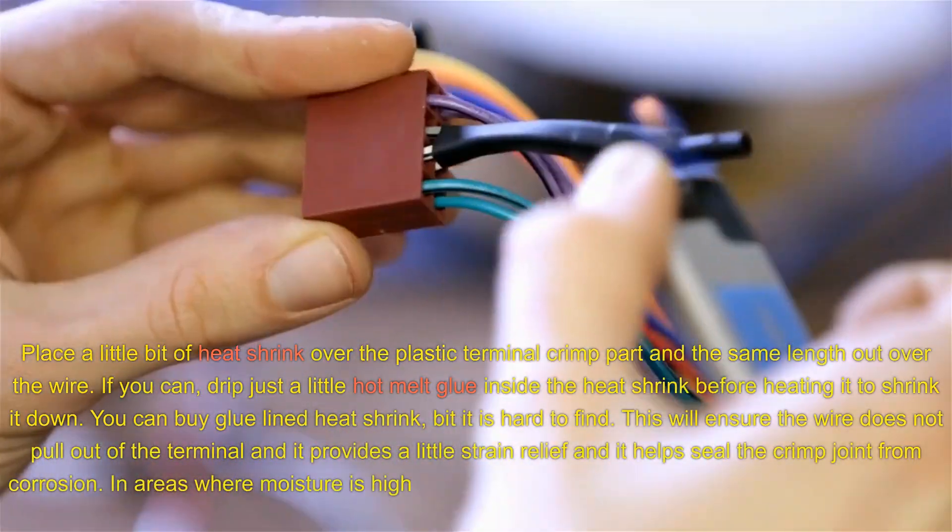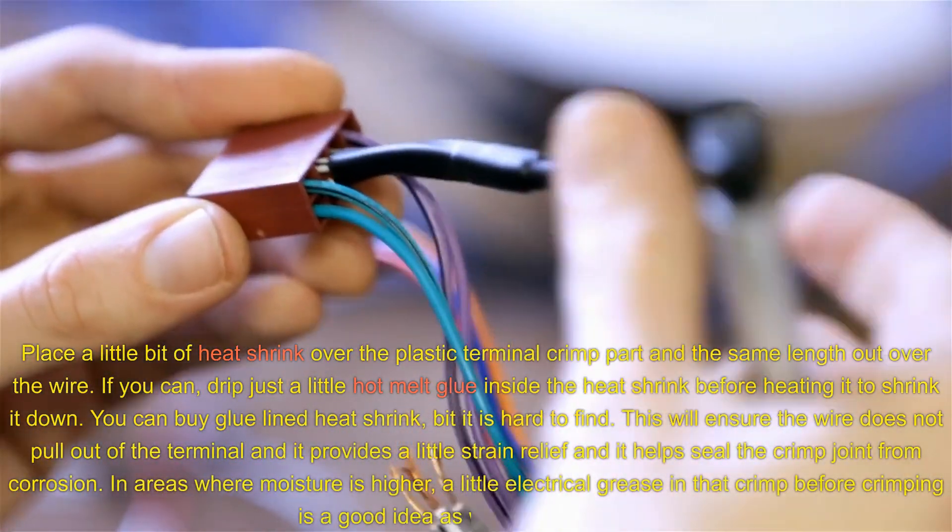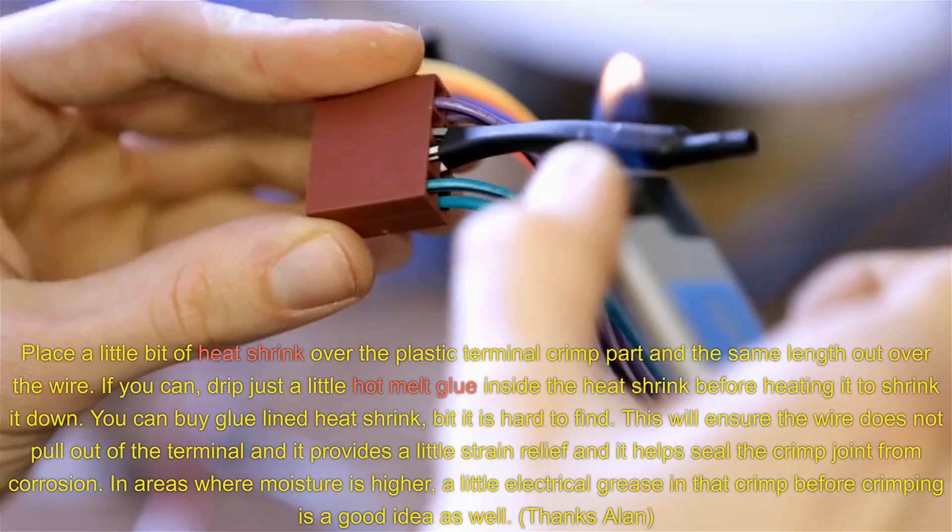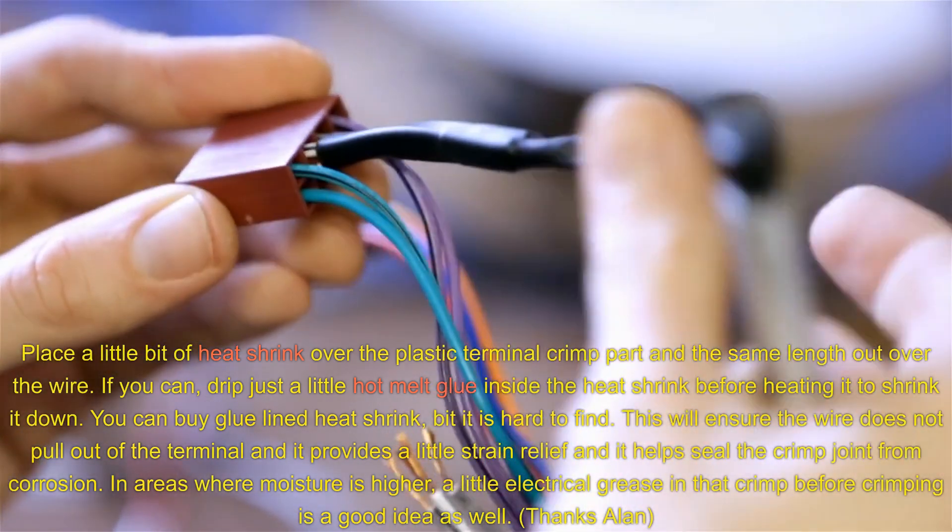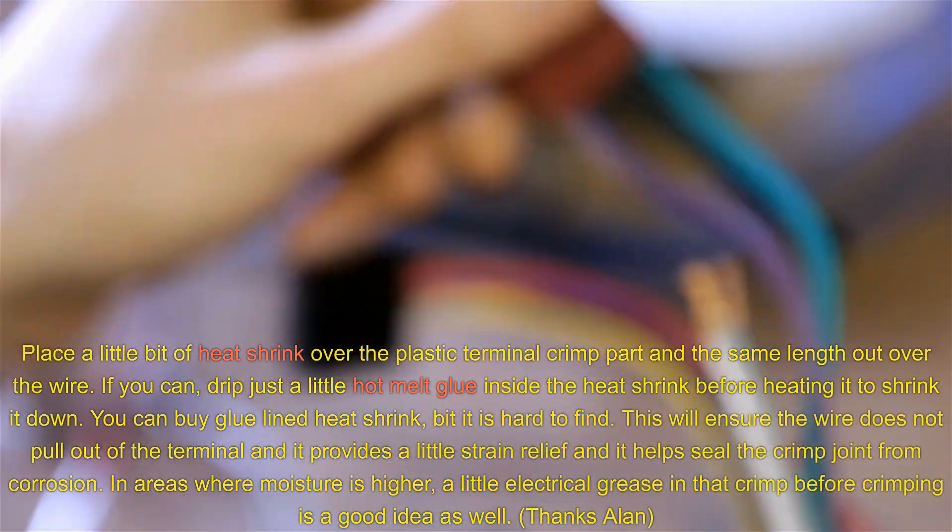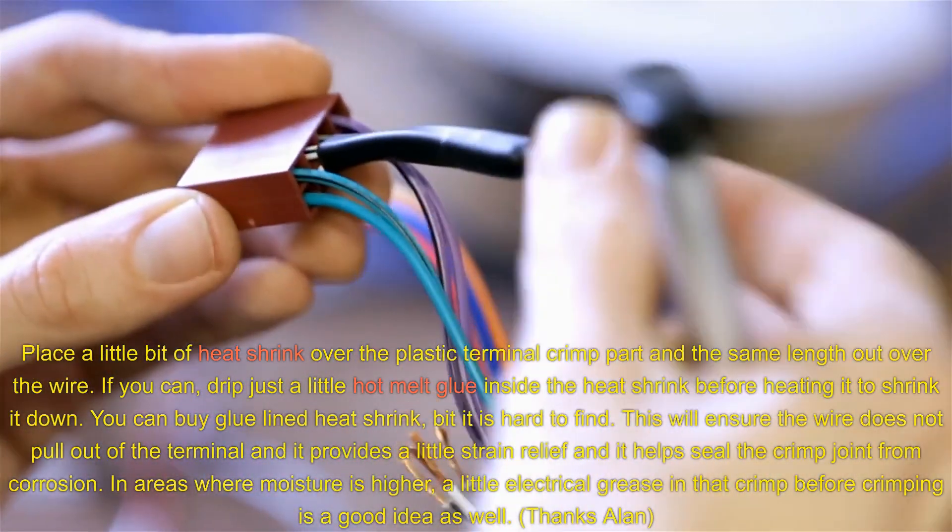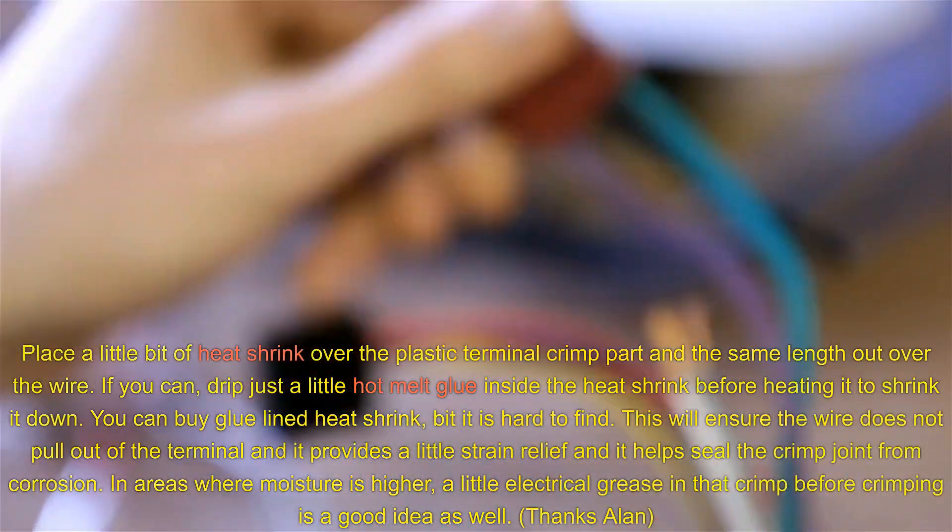Place a little bit of heat shrink over the plastic terminal crimp part and the same length out over the wire. If you can, drip just a little hot melt glue inside the heat shrink before heating it to shrink it down. You can buy glue-lined heat shrink, but it's hard to find. This will ensure the wire does not pull out of the terminal and it provides a little strain relief and it helps seal the crimp joint from corrosion.